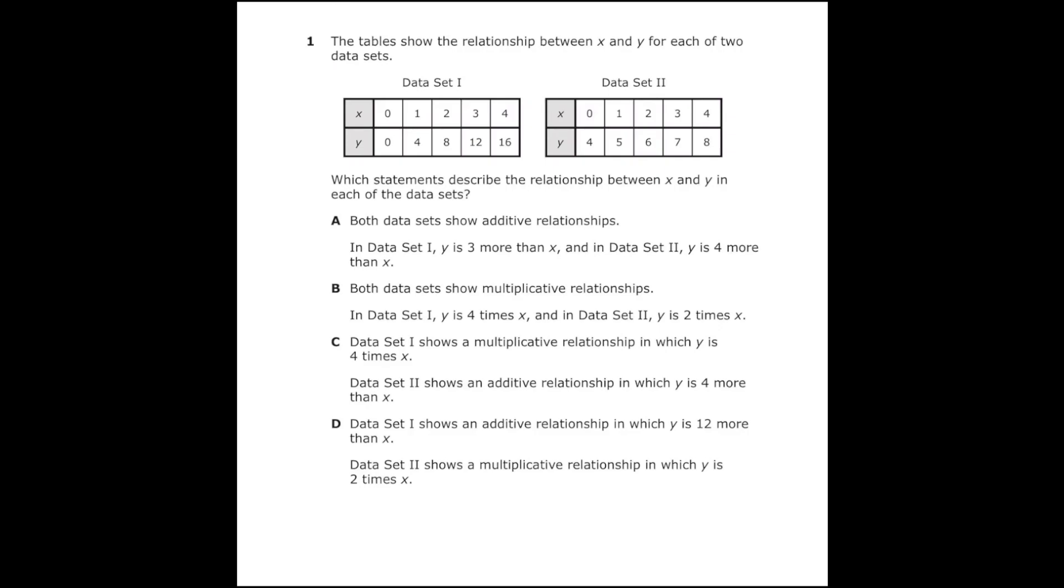This is number one from the 2022 sixth grade math STAR test and I'm going to be going over every single problem from that test. Number one says the table shows the relationship between x and y for each of two data sets. Which statements describe the relationship between x and y in each of the data sets?